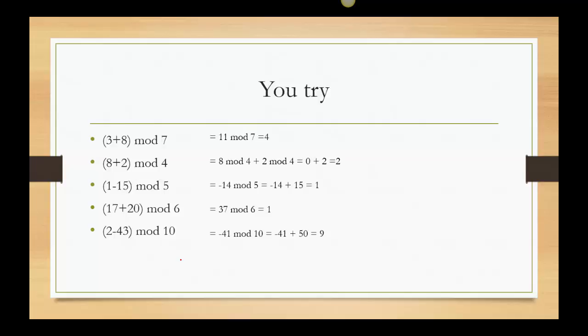Okay. So the first one. 3 plus 8 gives me 11. 11 mod 7. I can just do 11 minus 7 is 4. Alright. With 8 plus 2 mod 4, I just wanted to show you an alternative this time. You could do 8 mod 4 plus 2 mod 4 if you want to. So 8 mod 4 is 0. 8 is a multiple of 4. 2 mod 4. 2 is less than 4. So I leave it as 2. So I just get the answer 2. 1 minus 15 gives me a negative number. I have negative 14. So remember I need to add a positive multiple of the mod. So I'm going to add 15 to it. Negative 14 plus 15 gives me 1.